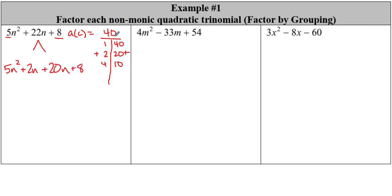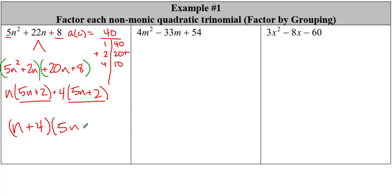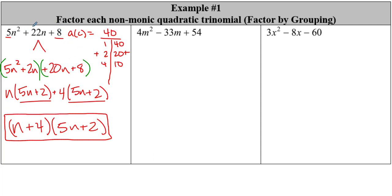Don't get confused and drop down the AC term — we are always dropping down the C term. Let's go ahead and group these. GCF here looks like n, and we're left with 5n plus 2. The GCF of our second group is a positive 4, giving us another 5n plus 2. These match, so now we've got (n + 4)(5n + 2). And remember — it's going to be plus and plus, because we had positive C and positive B.